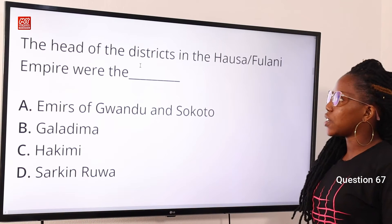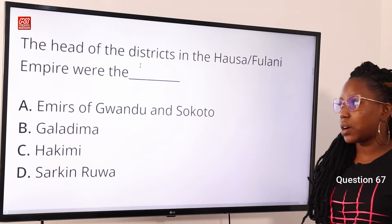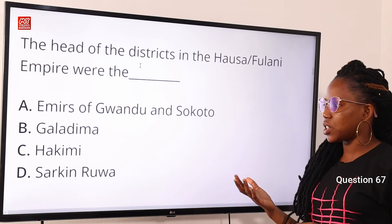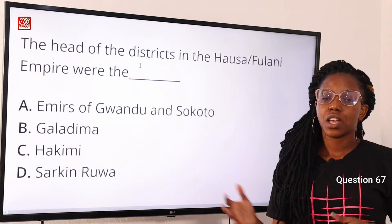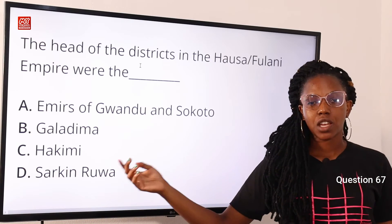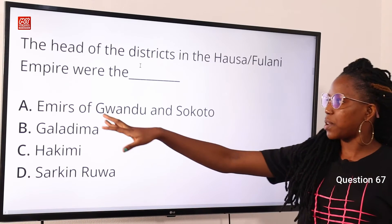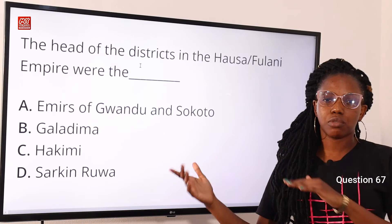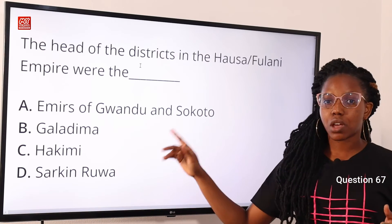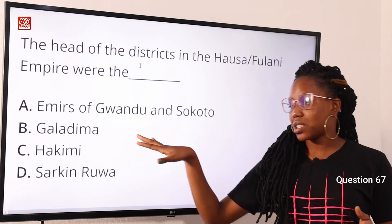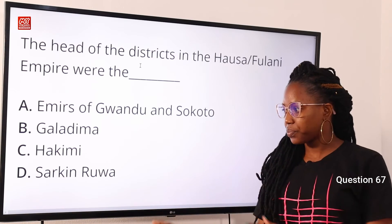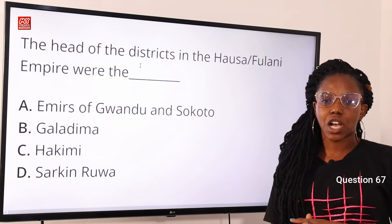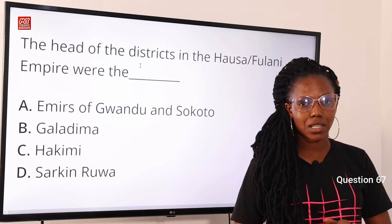Question 67: the head of the district in the Hausa/Fulani Empire was — A, Emirates of Gwandu and Sokoto; B, Galadima; C, Alkali; D, Sakinruwa. The answer is option C, Alkali, who was in charge of the district. The caliphates were divided into emirates, each headed by an emir — we had the Gwandu and Sokoto emirates. Galadima was in charge of the capital. Sakinruwa was the river fishing official. So Alkali was in charge of the district, and option C is the correct answer.